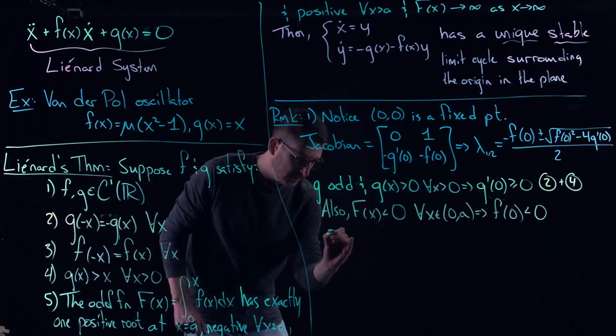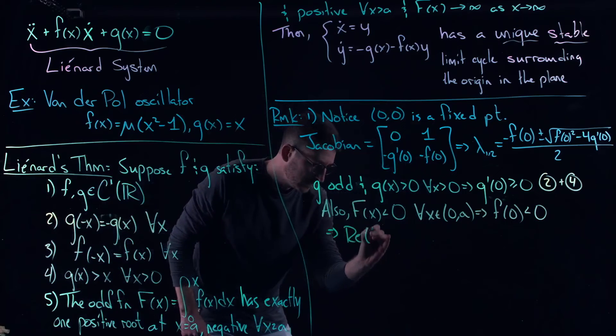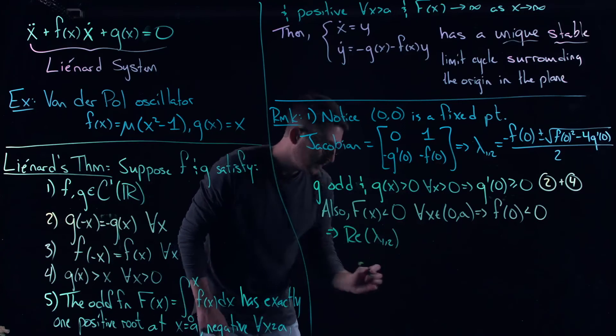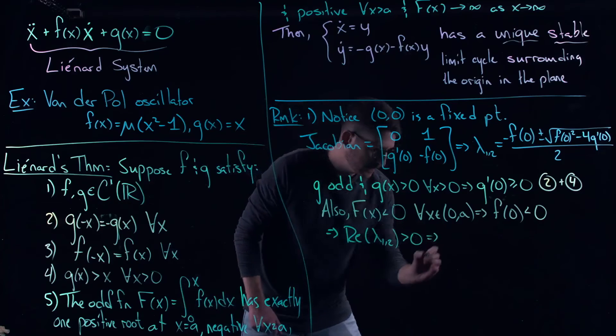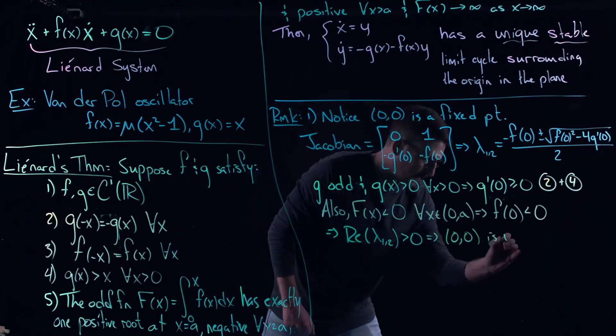Okay so what does this tell you? You can actually put these two things together and this tells you that the real part of λ_1 and λ_2 has to be positive, which implies zero zero is unstable.